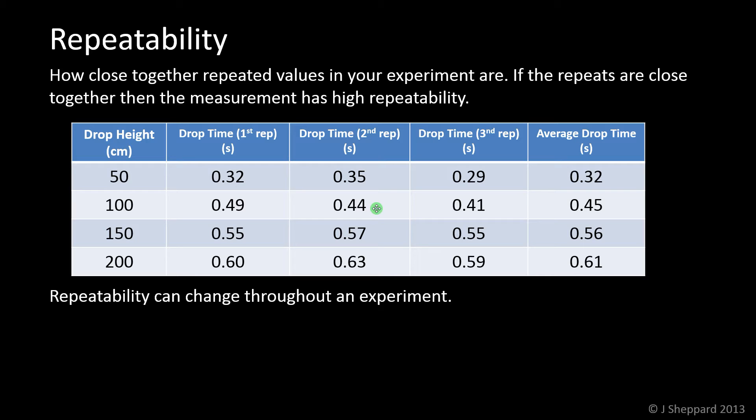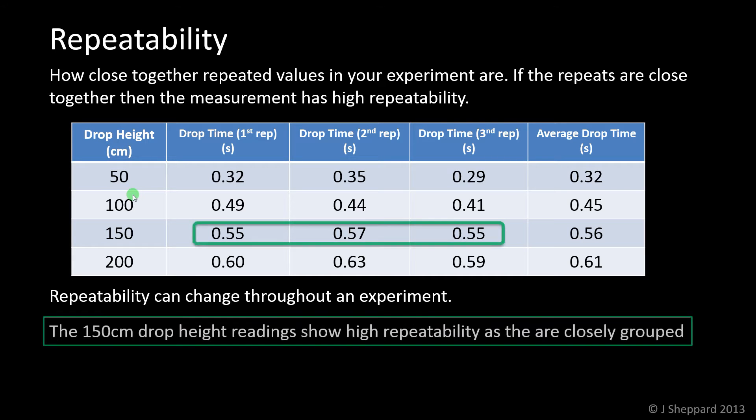Repeatability can change throughout an experiment because it's different for each value of the independent variable. If we look at this table of results for dropping a ball bearing from different heights and timing it, the 150 centimeter drop height shows 0.55, 0.57, 0.55. They are very closely grouped, so we'd say those are repeatable. There's only a difference of 0.02 across the entire set of repeats.